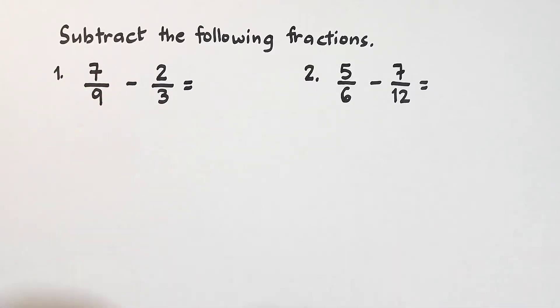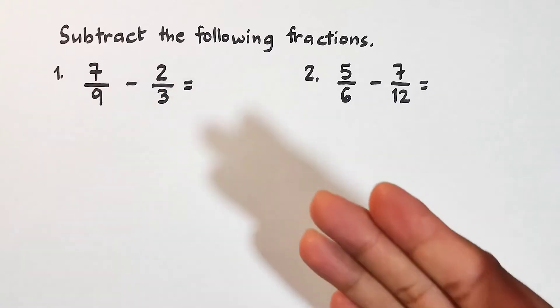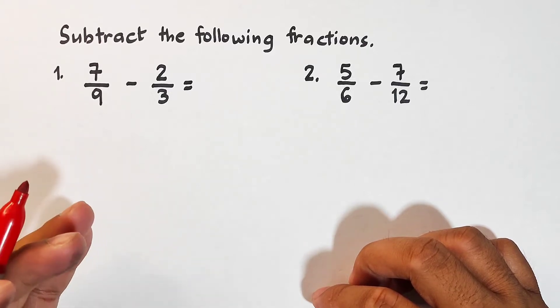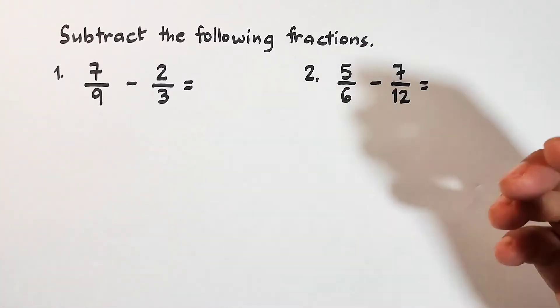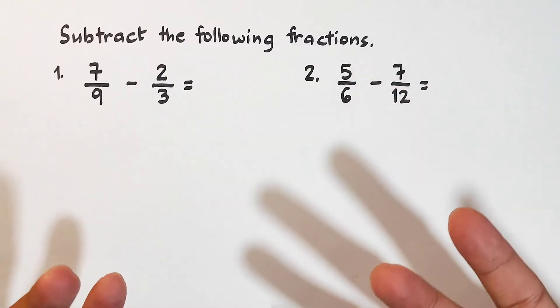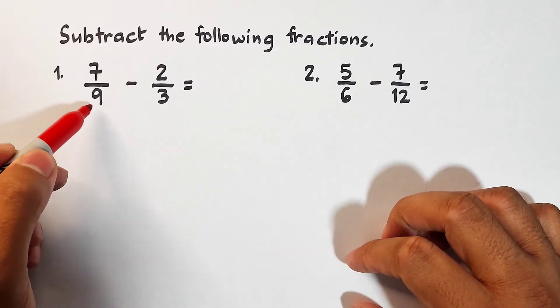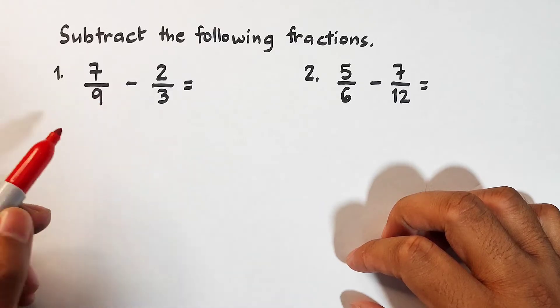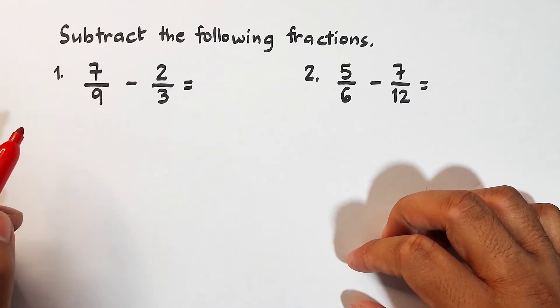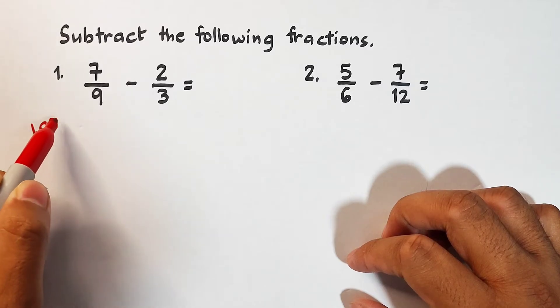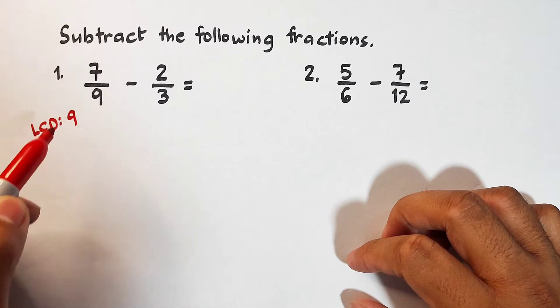Basically guys, since they have different denominators, what we need to do is to find the least common denominator to make our denominators the same. It's easier to add or subtract fractions when the denominators are the same. So, what we have here is 9 and 3. The LCD or the least common denominator is equal to 9.